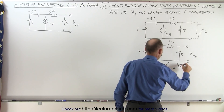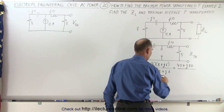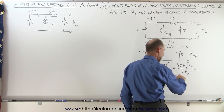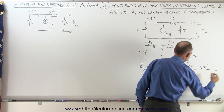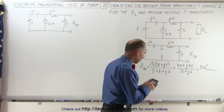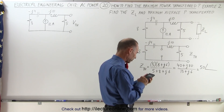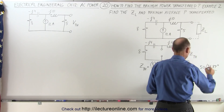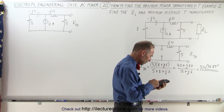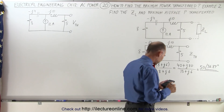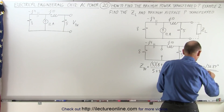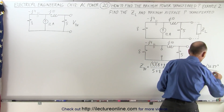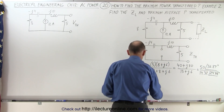This becomes equal to 40 + j30 divided by 13 + j6. Converting to polar form: 40 + j30 has a magnitude of 50 with a phase angle of positive 36.87 degrees. The denominator 13 + j6 has 13 squared plus 36 giving 205, square root giving 14.32, with a phase angle of inverse tangent of 6 over 13, which is 24.78 degrees.